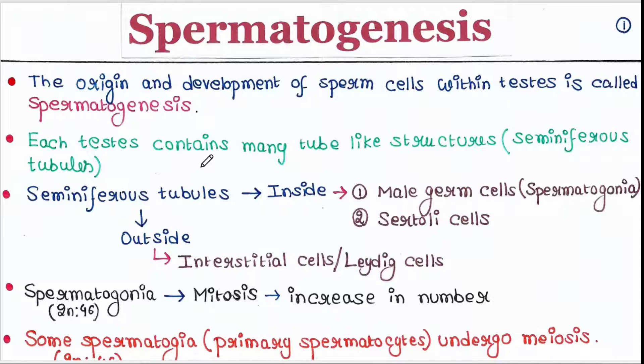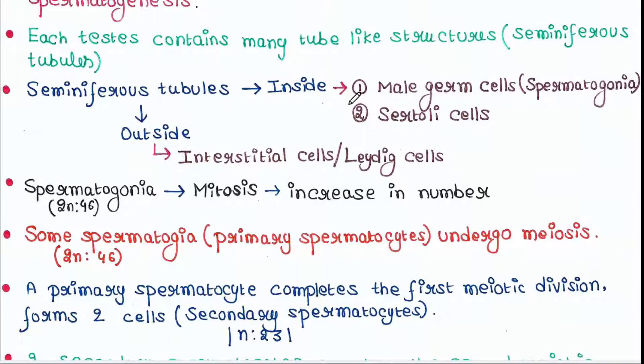Each testis contains many tube-like structures called seminiferous tubules. Inside the seminiferous tubules, male germ cells called spermatogonia and Sertoli cells are present. Outside the seminiferous tubules, you will find interstitial cells or Leydig cells.